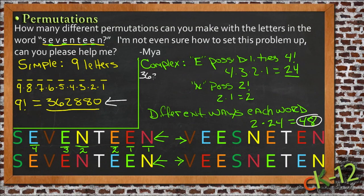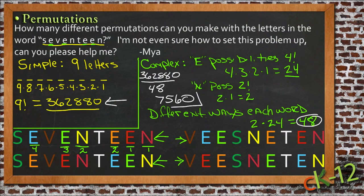That tells us that for every word we're writing there are 48 different ways to write it. So to find the actual number of different words we can come up with, we take our total number of possibilities and divide by the number of ways to write each word. If we take 362,880 and divide it by 48, we get 7,560. So 7,560 is the number of individual distinct words you can spell, while 362,880 is the total number of letter combinations.